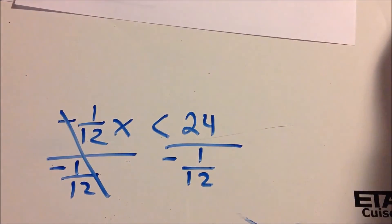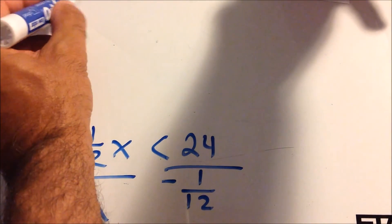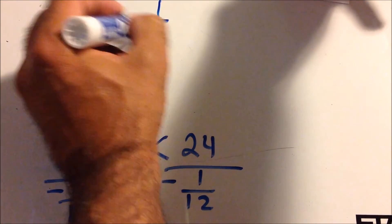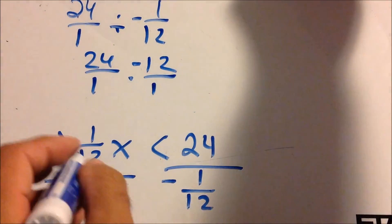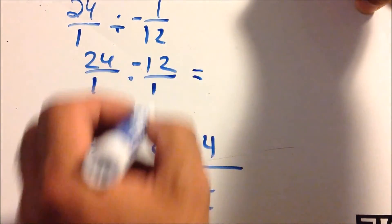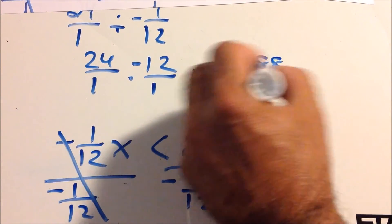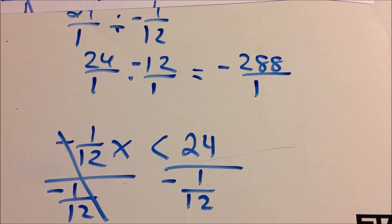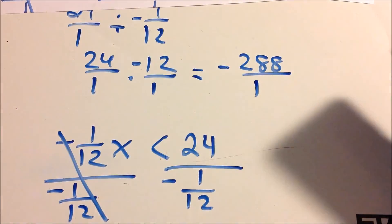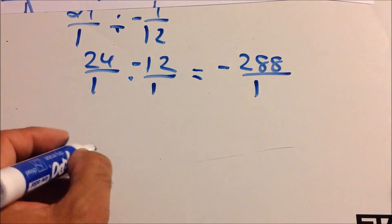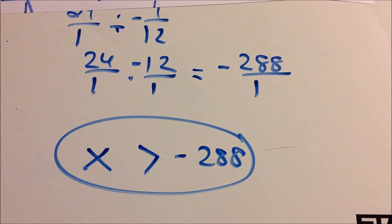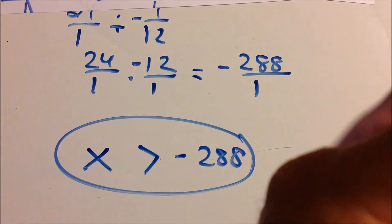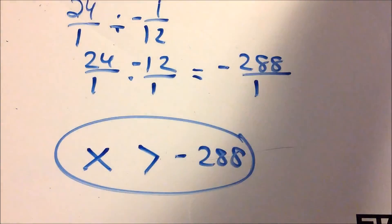We see that 24 over 1 divided by negative 1/12 — don't forget to flip it and don't forget the negative sign — gives us negative 288 over 1, or just negative 288. So x is no longer less than — because we flipped the sign — x is greater than negative 288. Rewind and watch again if you were confused with any of the topics. Great job!